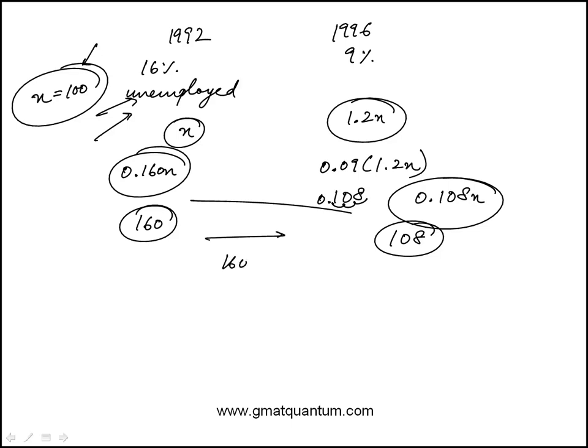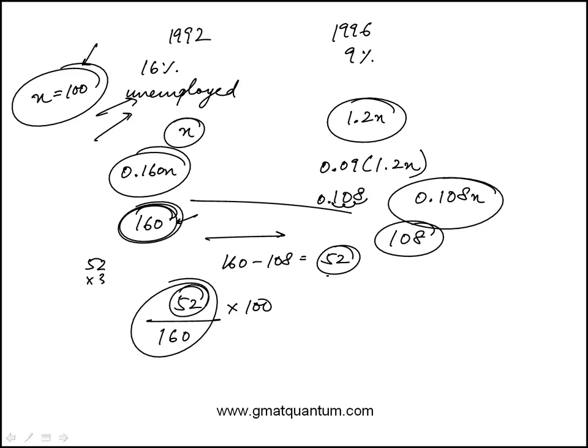In this case, the change would be 160 minus 108, which is 52. And then we need to find this as a percent of the original. So 52 over 160 times 100.